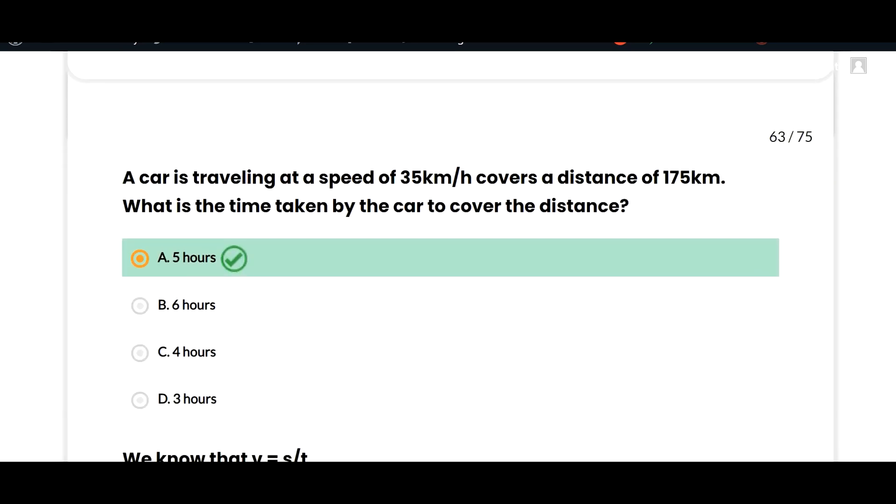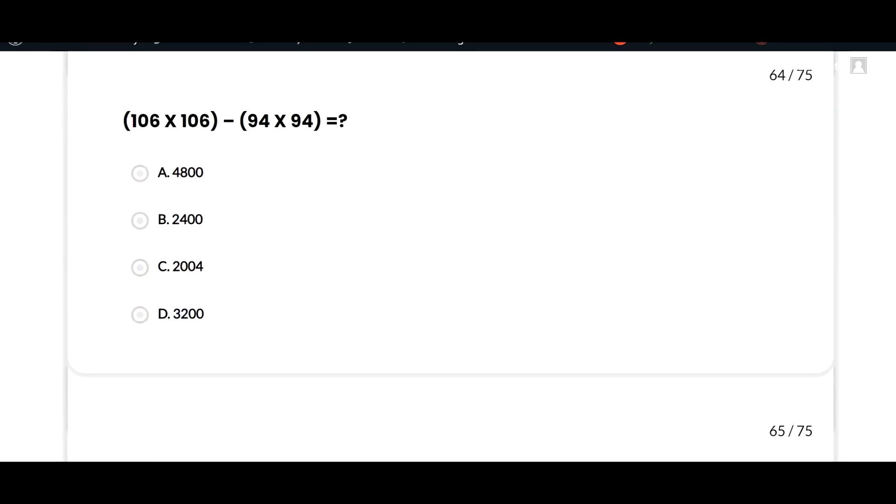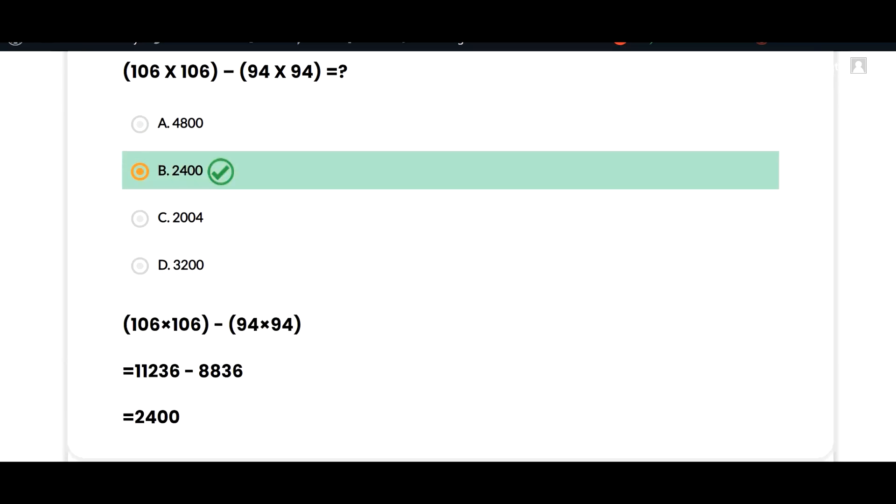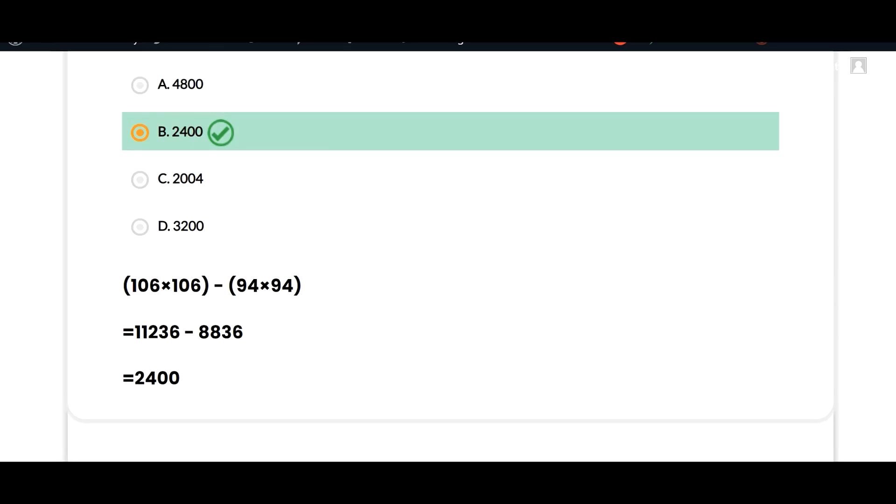Next: 106 multiplied by 106 minus 94 multiplied by 94. We get the value 2400, because 106 multiplied by 106 equals 11236, minus 8836 gives us 2400. So this MCQ, option B is correct.